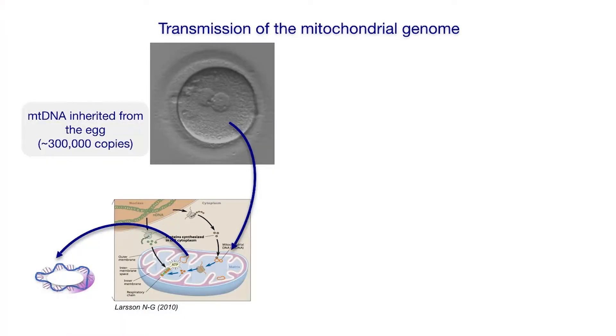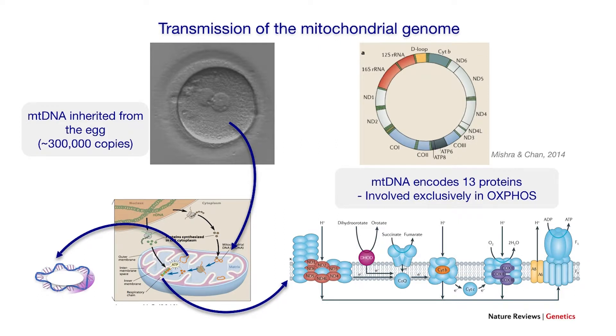Moving to the mitochondrial genome — this is an area where we have been a bit more successful in developing intervention strategies. The mitochondrial DNA is inherited; there are about 300,000 copies in the fertilized egg, inherited from our mothers only. It consists of a circular molecule of DNA, and it encodes altogether just 37 genes, 13 of which are proteins. These proteins are exclusively involved in oxidative phosphorylation, and they work together with proteins encoded by the nuclear genome — shown here in blue — to produce the ATP our cells need to function properly.